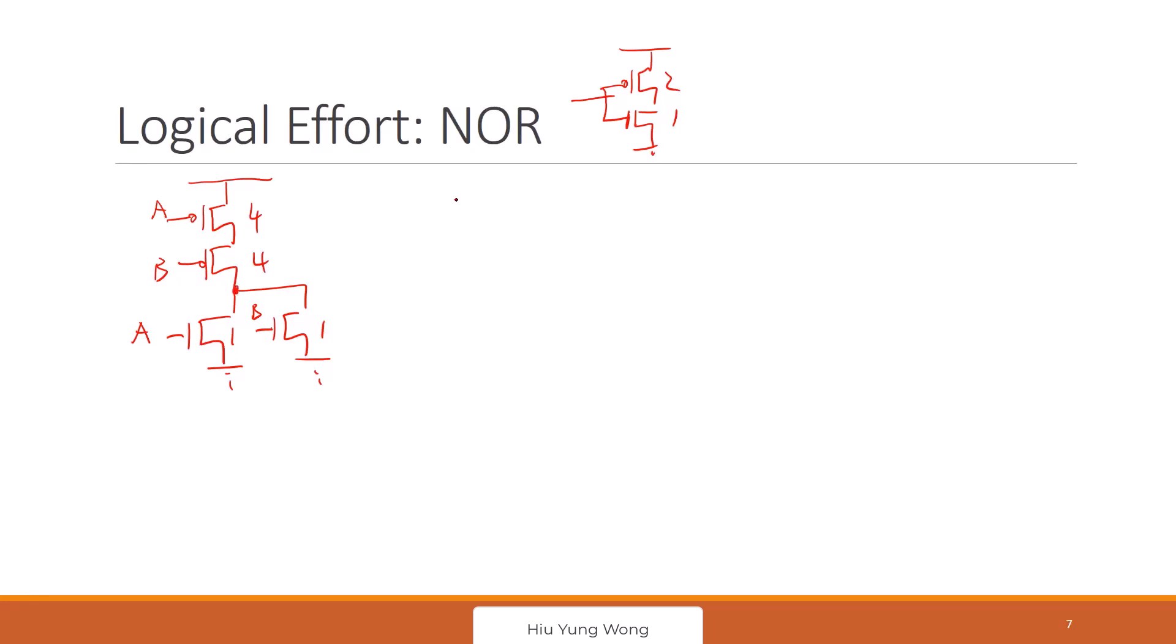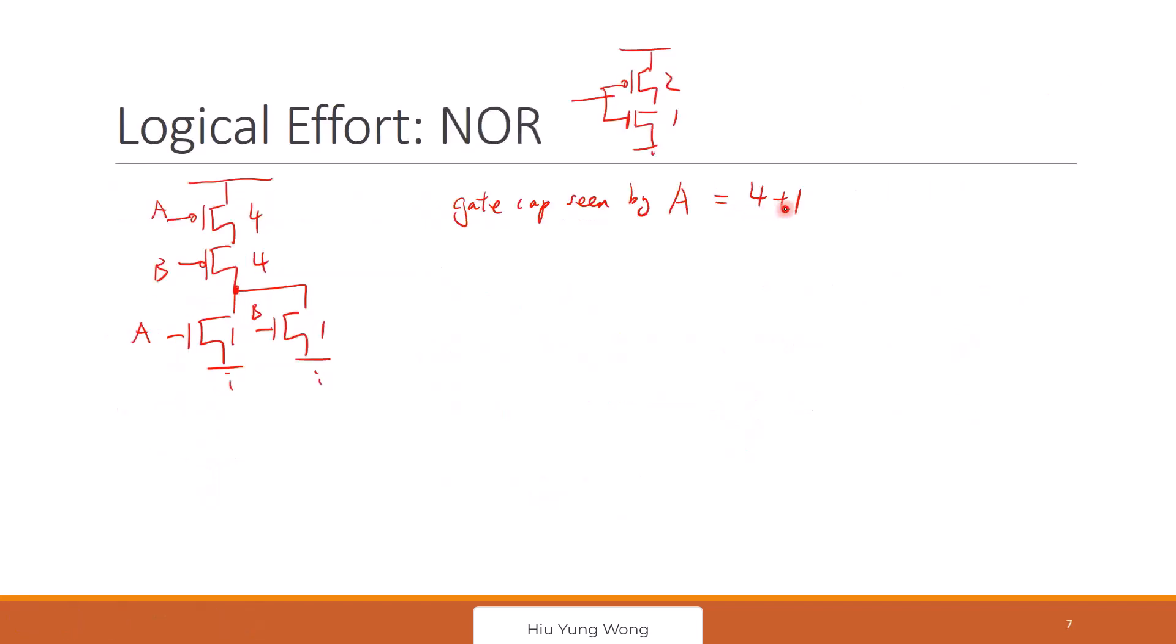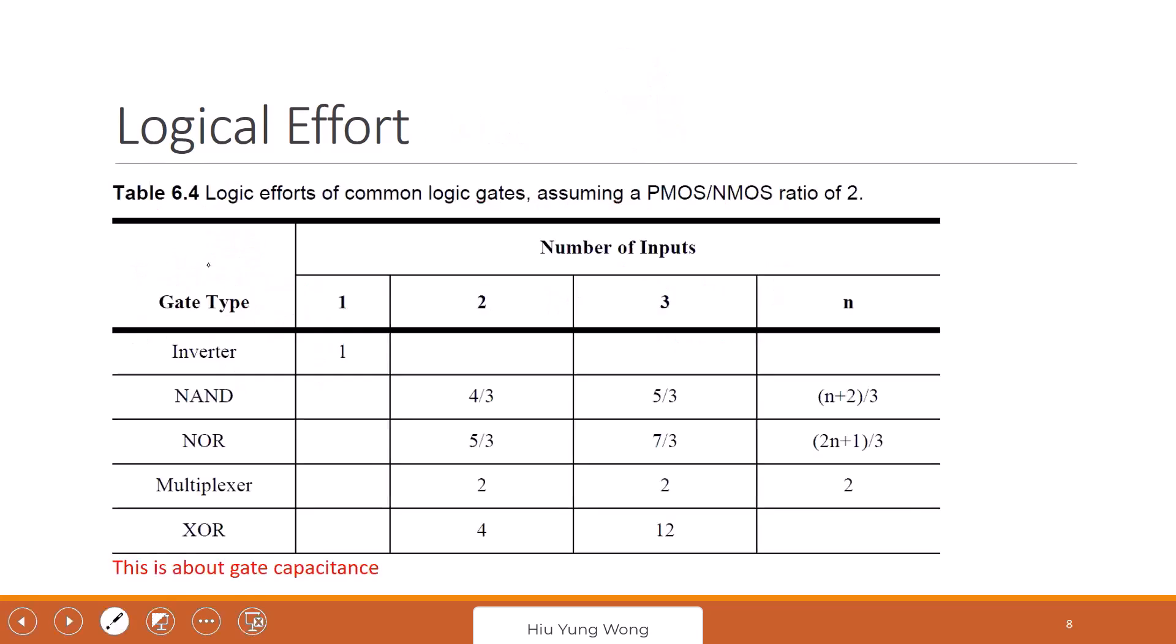Then we are asking what is the gate cap seen by A. It is 4 plus 1. Now I don't put the unit capacitance anymore because we know that they cancel. So what is G? It's just the gate cap seen by A divided by that of inverter. We already said for inverter you see 3. So this is 5 divided by 3. So now when you see this thing, you will see more than other people. Even if I did not draw the cap, you know that there's some intrinsic cap here. You know there's a gate capacitance. Other people only see I have a big transistor, but you also know that we have cap.